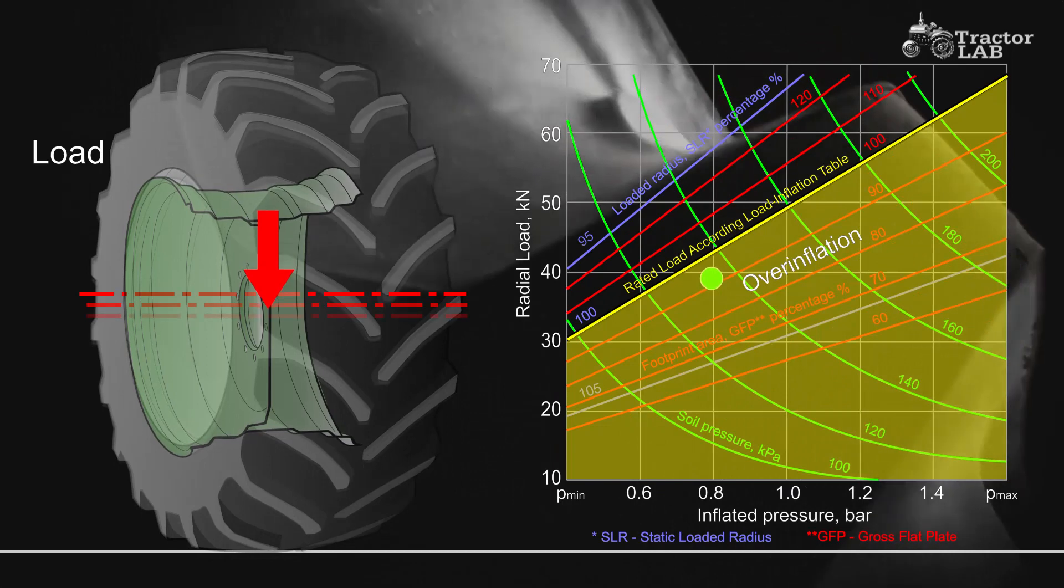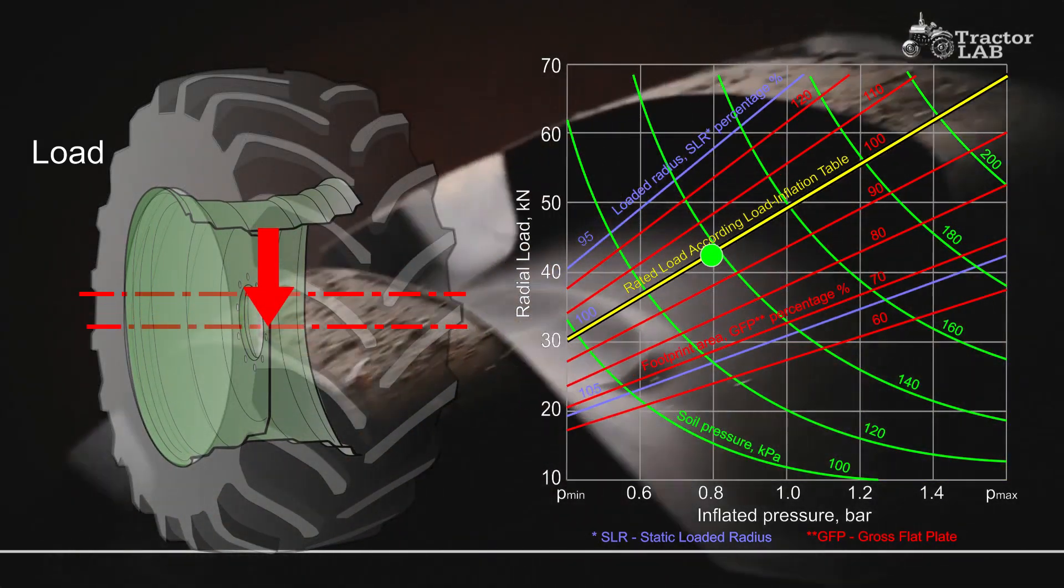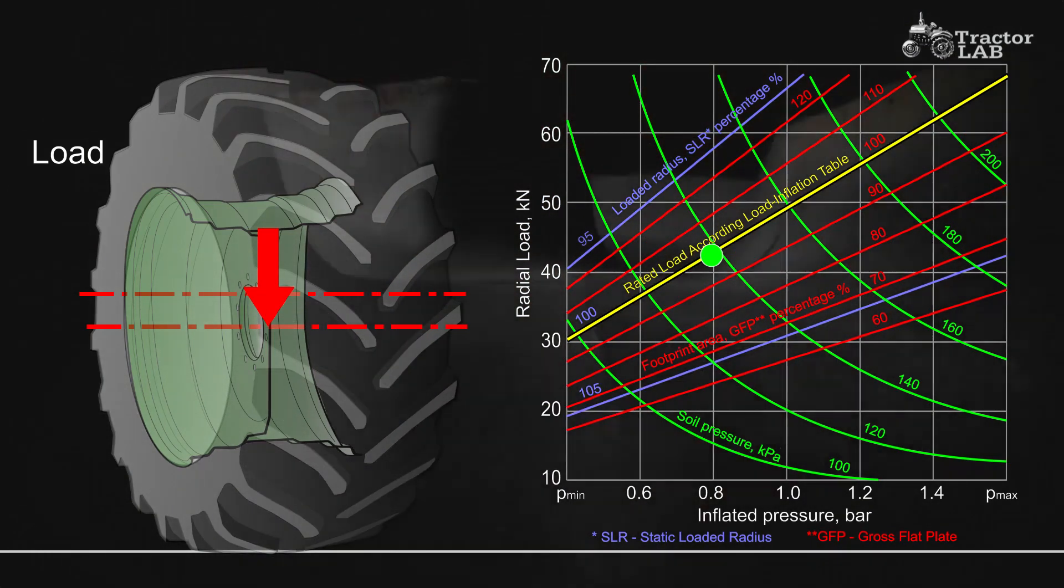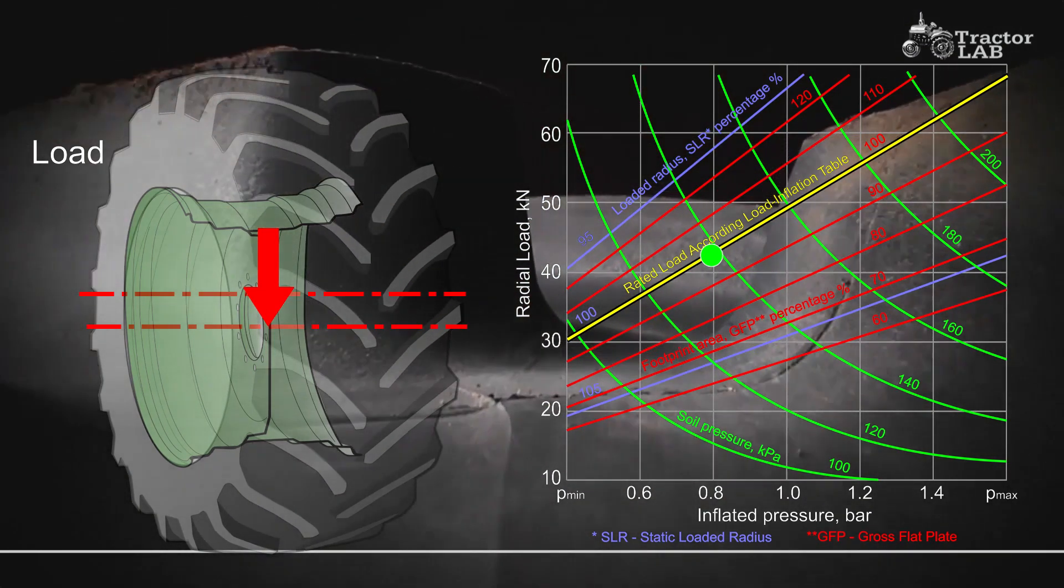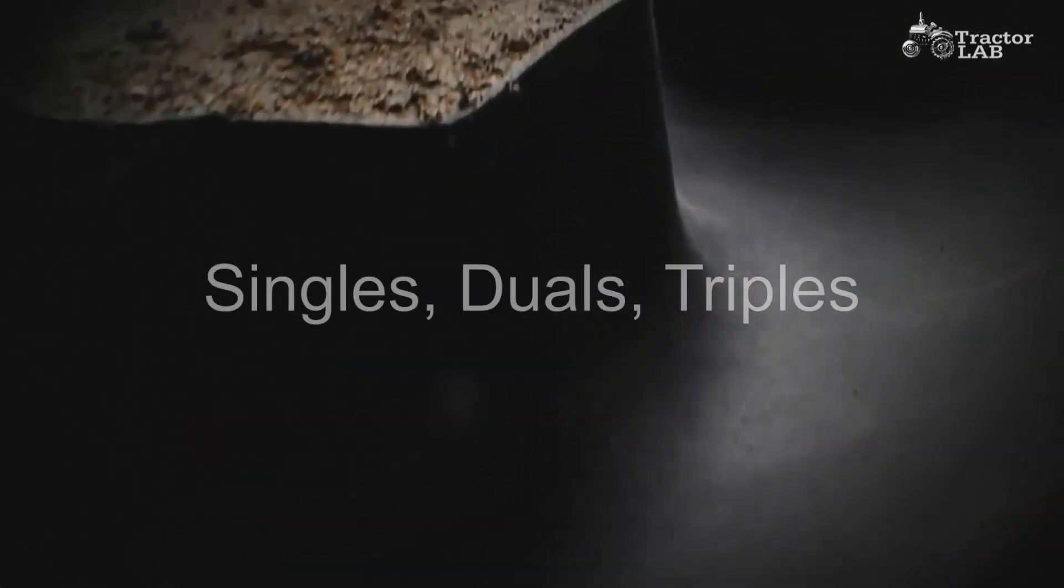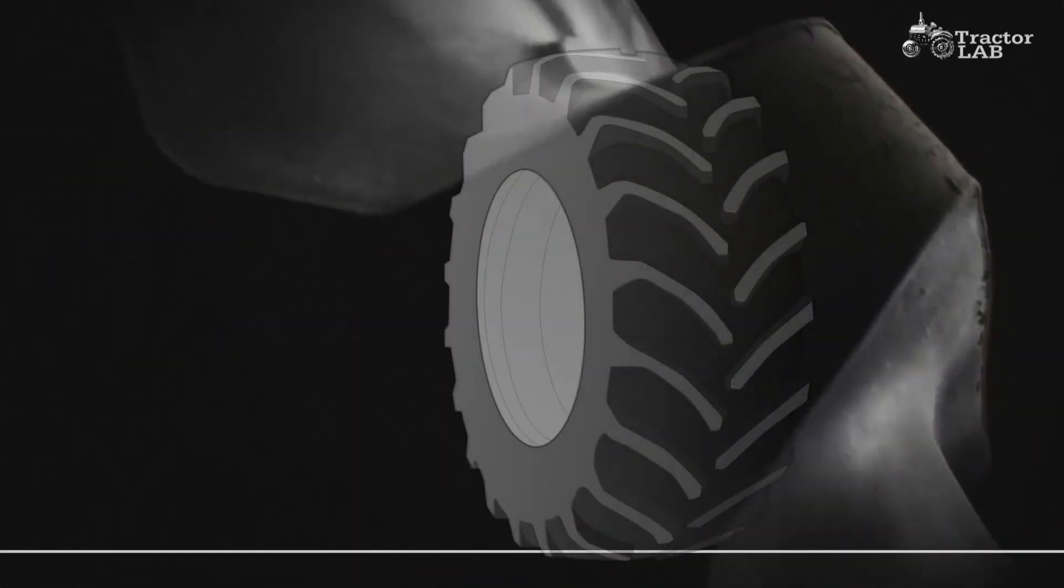The harder carcass with reduced flexing characteristics does not work as efficiently. Moreover, the tightly stretched, over-inflated carcass is more subject to weather checking and impact breaks. Singles, duals, or triples: Duals or triples can give you increased traction or increased flotation over single tires, depending on how you set them up.